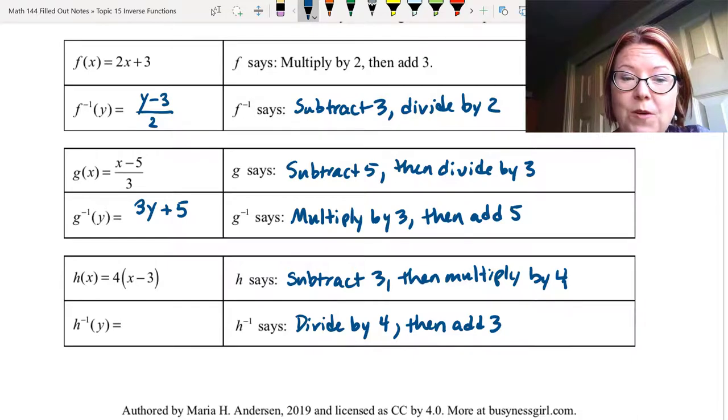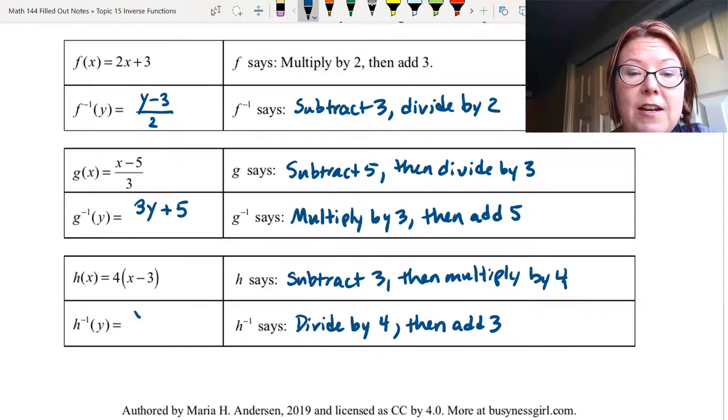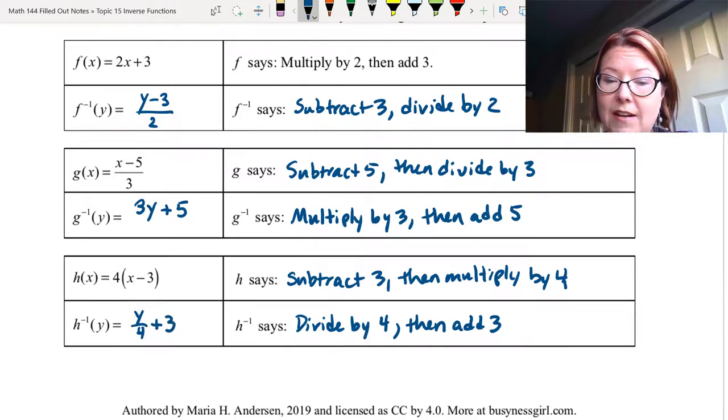h inverse of y, which is written h superscript negative 1 left paren y right paren, would be what we're doing to y. We start by dividing y by 4, that's y over 4, and then off to the side plus 3 outside of the fraction.